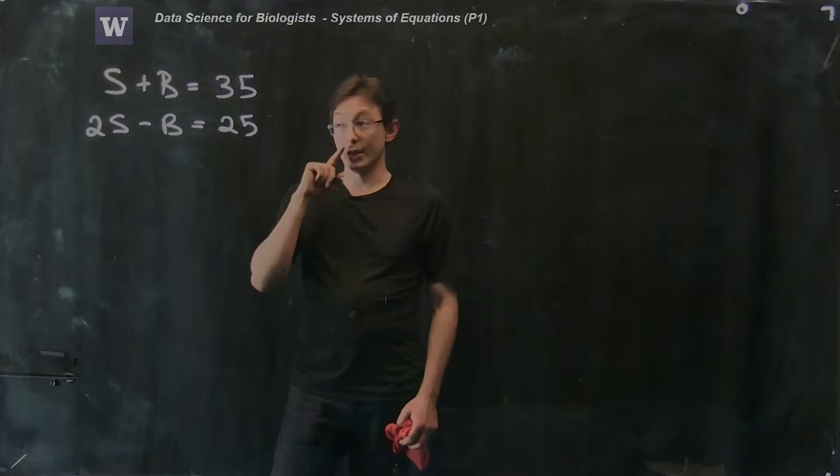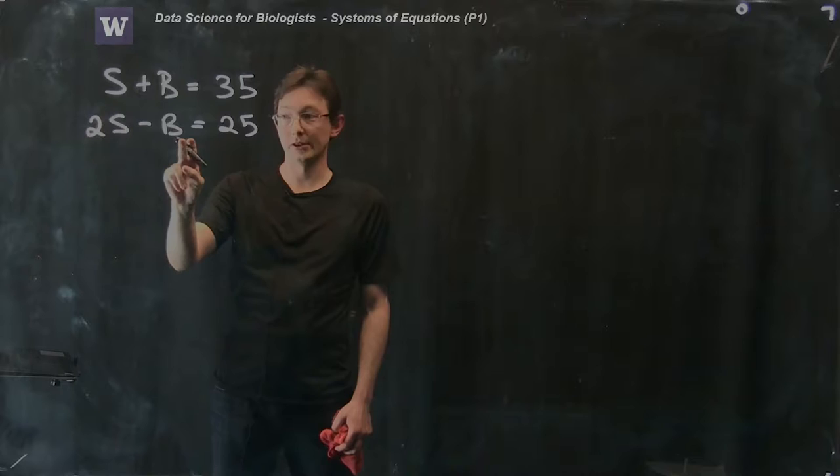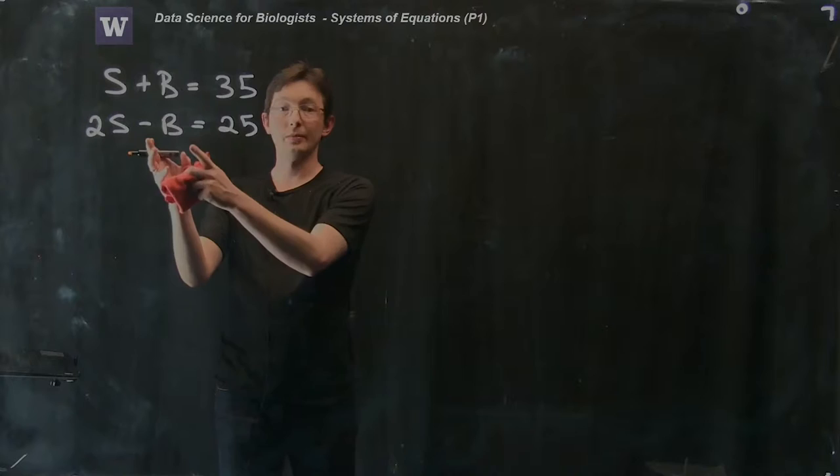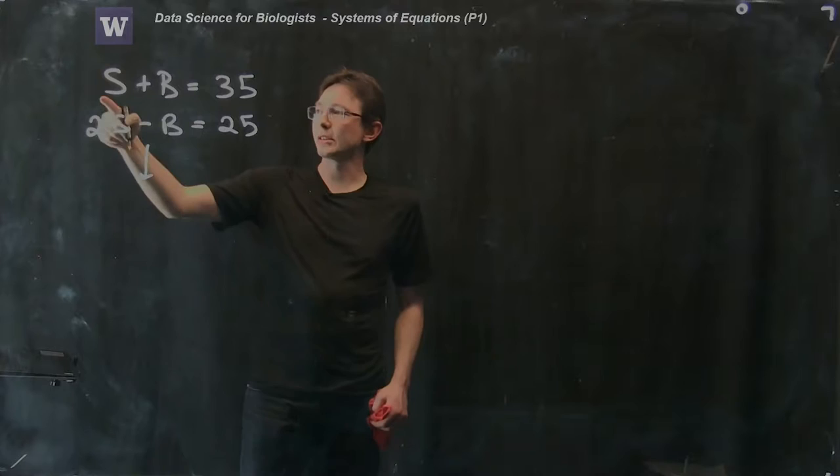The first thing we're going to try to do is essentially get rid of all of the S terms in the second equation so we just have B equals a number, and we're going to try to get rid of all of the B terms in the first equation so we just have S equals a number. That's what we want. We want Sally equals some age and Bob equals some age.